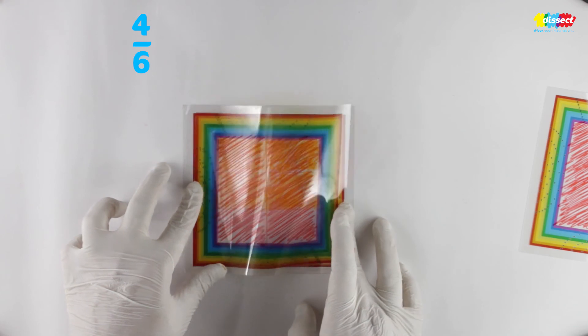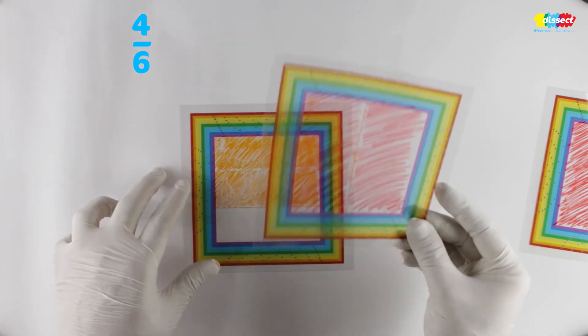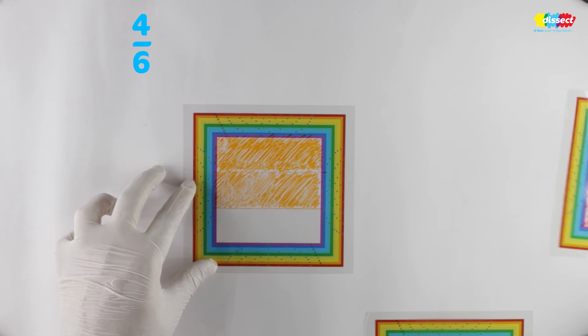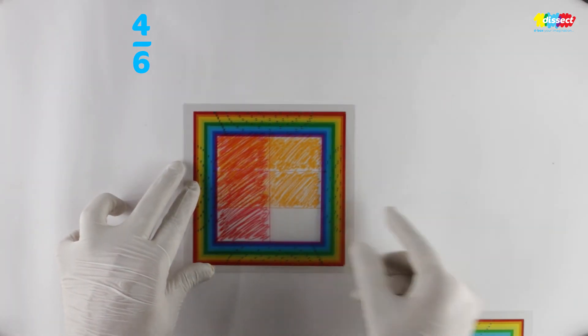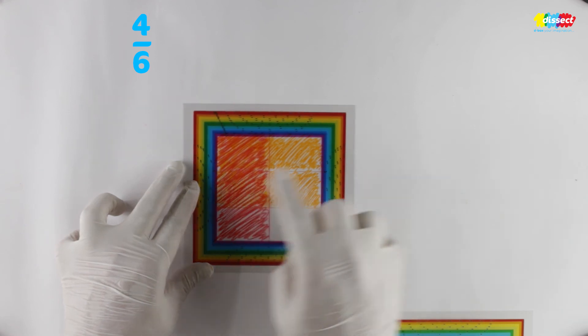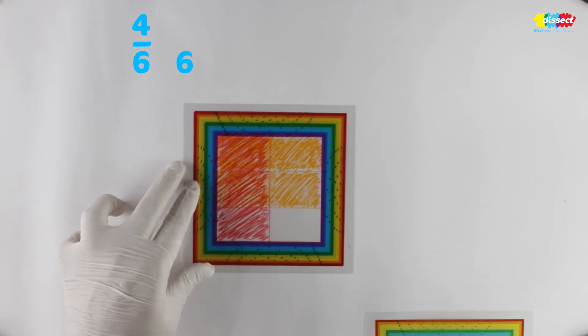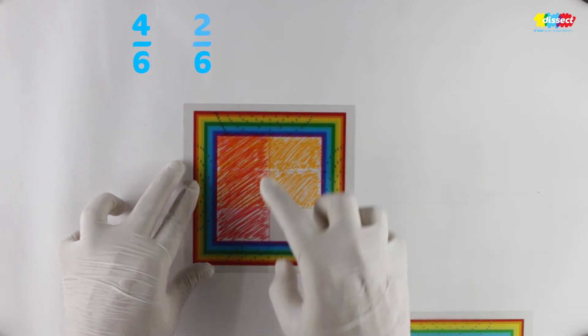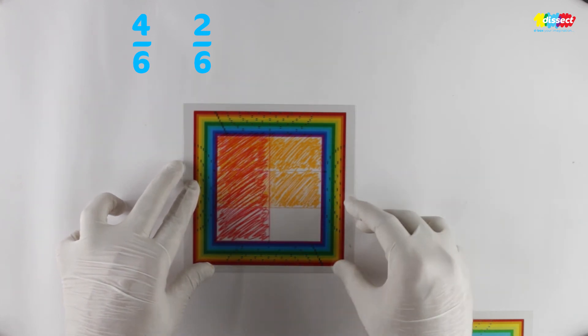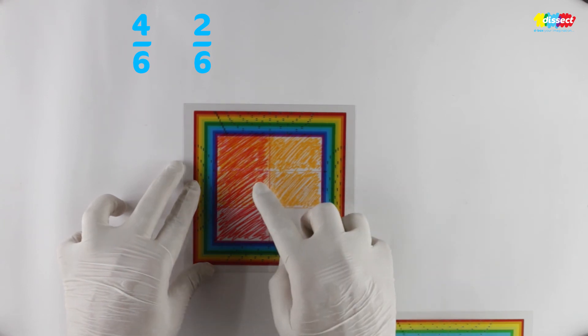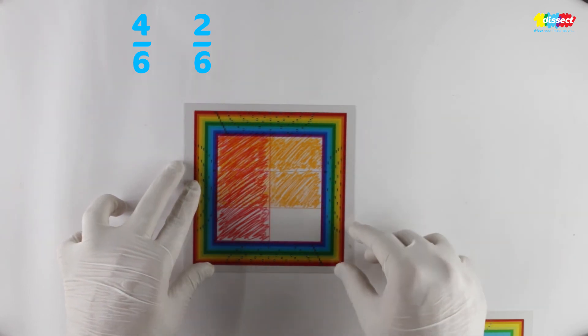Now what we will do is this was our sheet. We are going to change it with this sheet. Now in this sheet what is happening? Again the same 6 boxes you can see. But only 2 of them have been shaded twice or are common. So what we will do? The answer is 2 by 6.